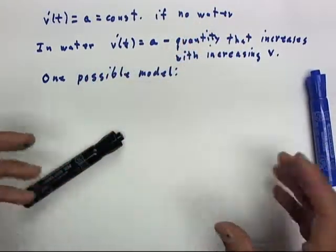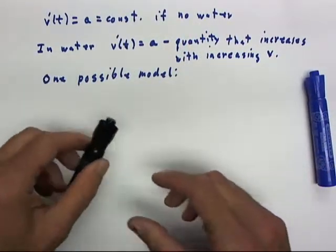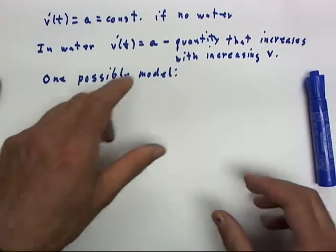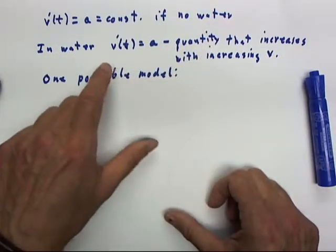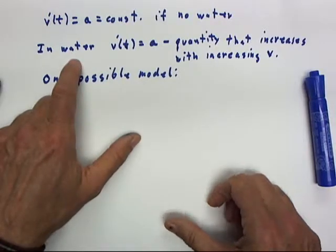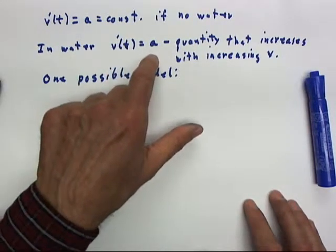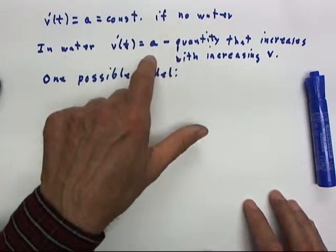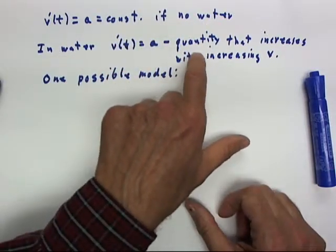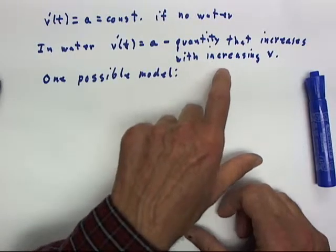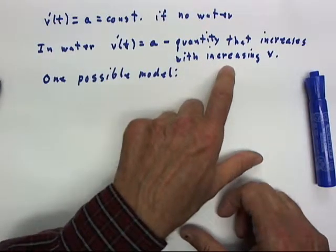We're assuming a straight ramp and no other influences other than gravity, and we're not going to talk too much about the physics. So in water, we have a function v' of t equals a, same as it would be if there was no water, but then we have to subtract off some quantity that increases with increasing v.